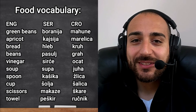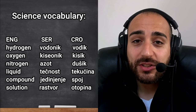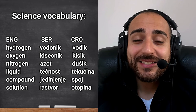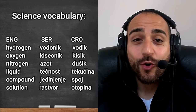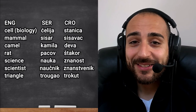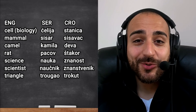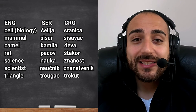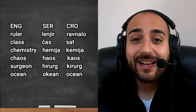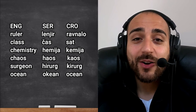Science vocabulary: hydrogen — 'vodonik' vs 'vodik'; oxygen — 'kiseonik' vs 'kisik'; nitrogen — 'azot' vs 'dušik'; liquid — 'tečnost' vs 'tekućina'; compound — 'jedinjenje' vs 'spoji'; solution — 'rastvor' vs 'otopina'; cell — 'ćelija' vs 'stanica'; mammal — 'sisar' vs 'sisavac'; camel — 'kamila' vs 'deva'; rat — 'pacov' vs 'štakor'; science — 'nauka' vs 'znanost'; scientist — 'naučnik' vs 'znanstvenik'; triangle — 'trougao' vs 'trokut'; ruler — 'lenjir' vs 'ravnalo'; class/hour — 'čas' vs 'sat'; chemistry — same in both; chaos — 'kaos' same; surgeon — 'hirurg' vs 'kirurg'; ocean — same in both.